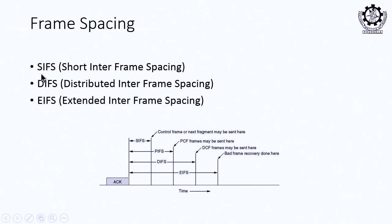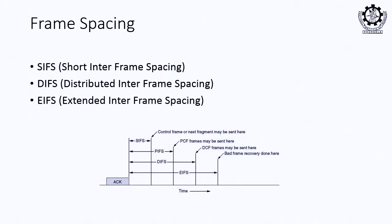One type of inter-frame spacing is SIFS — the short inter-frame spacing — which has a smaller duration. Since control signals like RTS, CTS, and acknowledgements are very small in size, a short time gap between them is sufficient. So SIFS is used between control frames where a small inter-frame spacing is adequate.